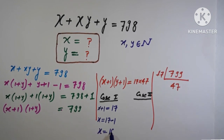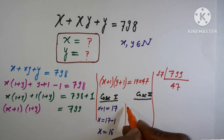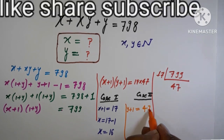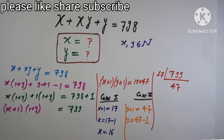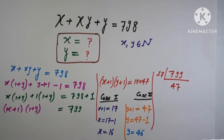Continuing Case 1, y plus 1 equals 47, so y equals 47 minus 1, which gives y equal to 46.